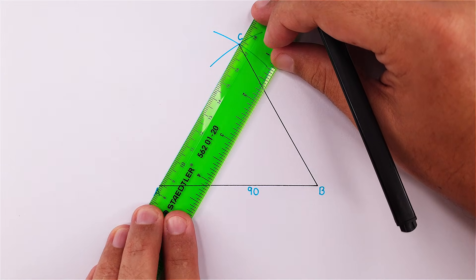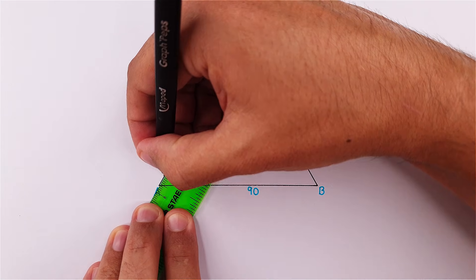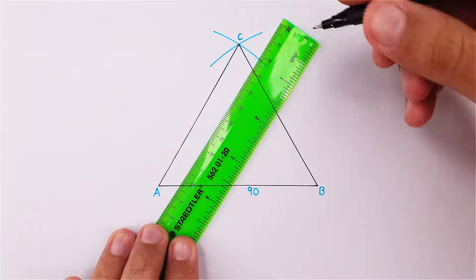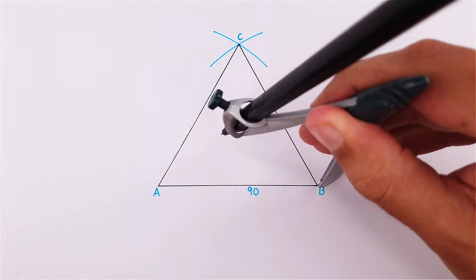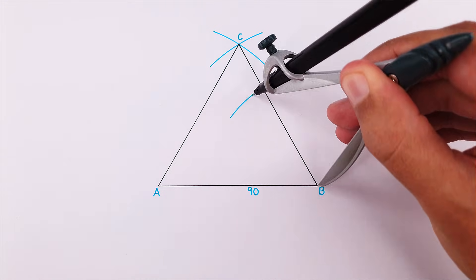Next, we will have to draw a perpendicular bisector on two sides to determine the circumcenter. Let's start with side AB. Place your compass on point B and adjust it to more than half the distance to point A.